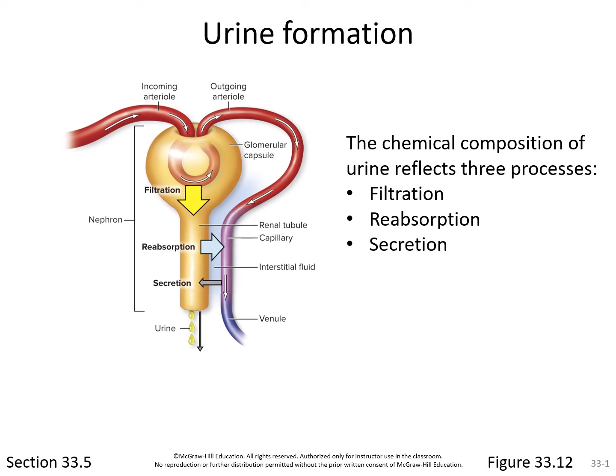We're going to examine the process of urine formation and then take a look at some dysfunctions of the urinary system. The chemical composition of urine reflects three different processes: filtration, reabsorption, and secretion.